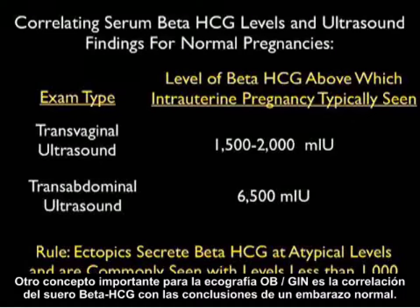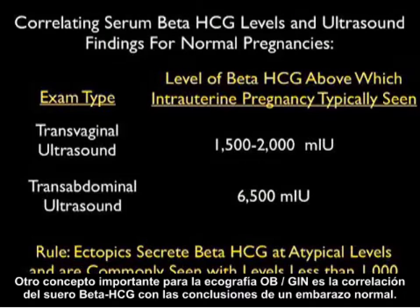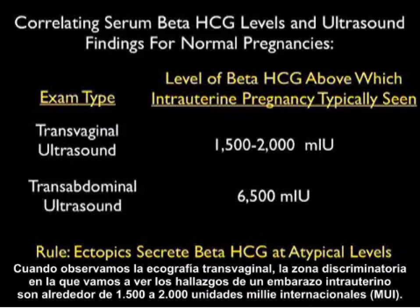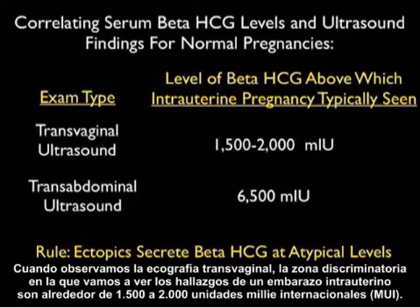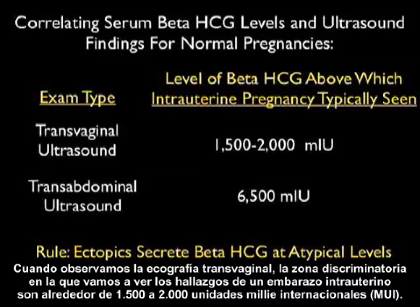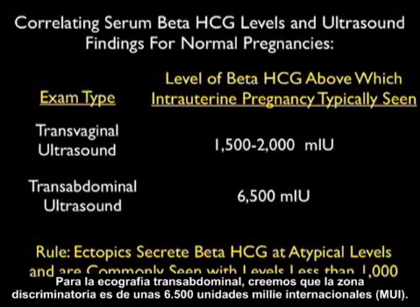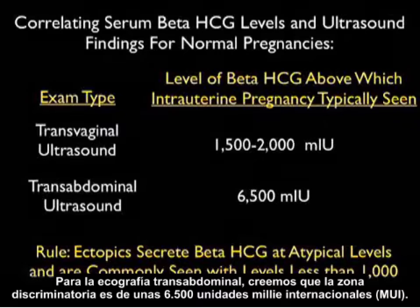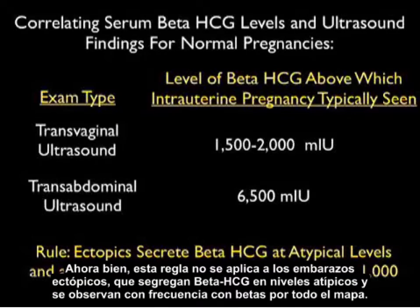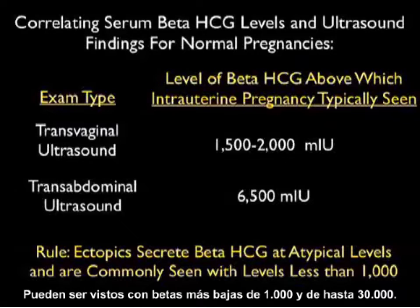Another important concept is the correlation of serum beta HCG to the findings of a normal pregnancy. For transvaginal sonography, the discriminatory zone at which we will see findings of an intrauterine pregnancy is about 1,500 to 2,000 milli-international units. For transabdominal sonography, the discriminatory zone is about 6,500 milli-international units. This rule does not apply to ectopic pregnancies, which secrete beta HCG at atypical levels — they can be seen with betas lower than 1,000 and as high as 30,000.